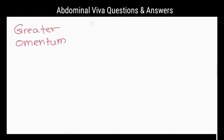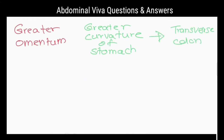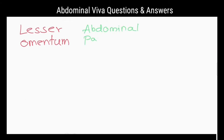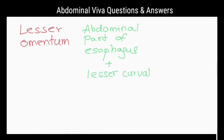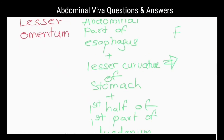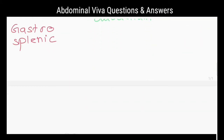The greater omentum connects the greater curvature of the stomach to the transverse colon and hangs down like an apron in front of the coils of small intestine. The lesser omentum suspends the abdominal part of the esophagus, lesser curvature of the stomach, and first half of the first part of the duodenum from the fissure for ligamentum venosum and porta hepatis on the under surface of the liver. The gastrosplenic omentum connects the stomach to the hilum of the spleen.